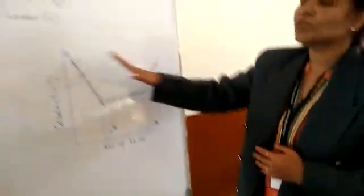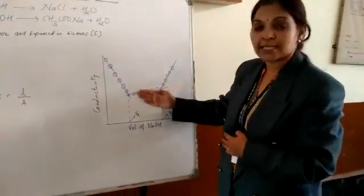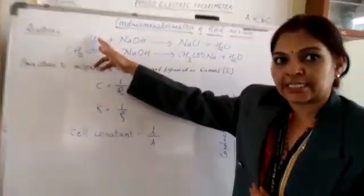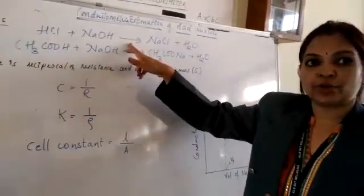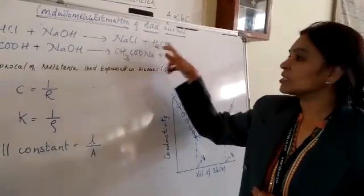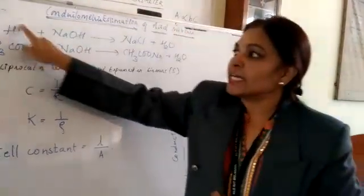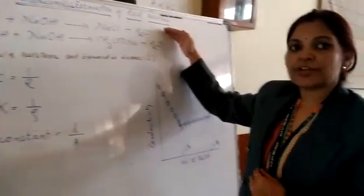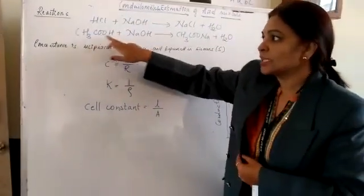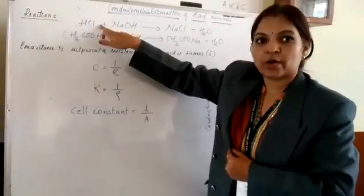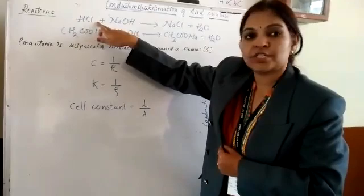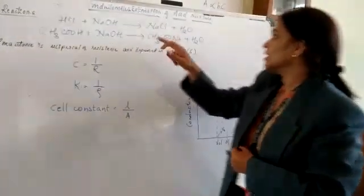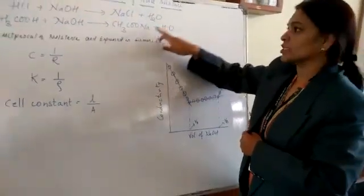From this you get three limbs in the graph. First, there is a decrease in conductivity because the H⁺ concentration decreases as HCl reacts with NaOH to form NaCl and water. After the complete utilization of HCl, the second reaction takes place — acetic acid reacts with NaOH — since HCl is a stronger acid and initiates the reaction first. This forms sodium acetate and water.